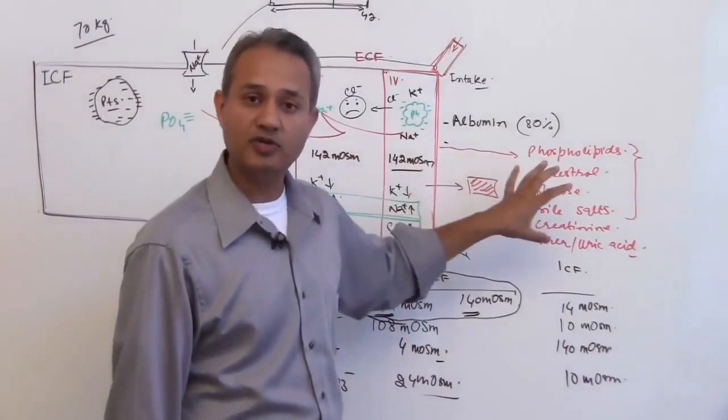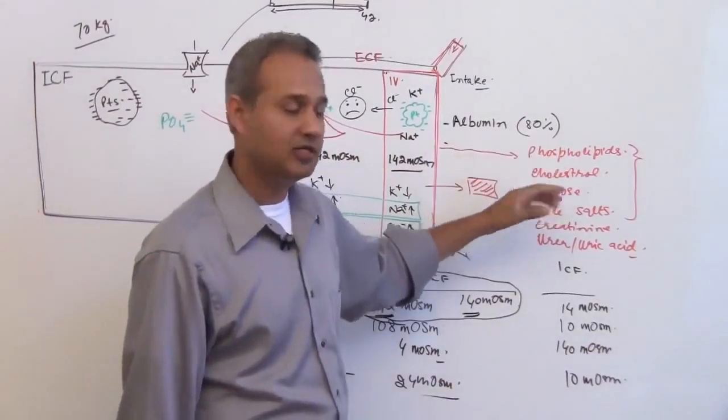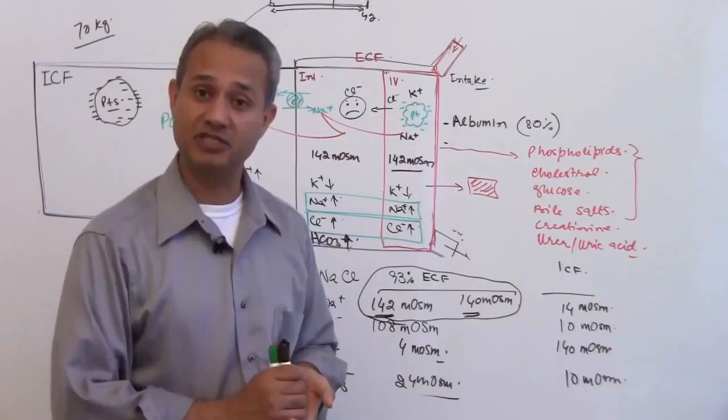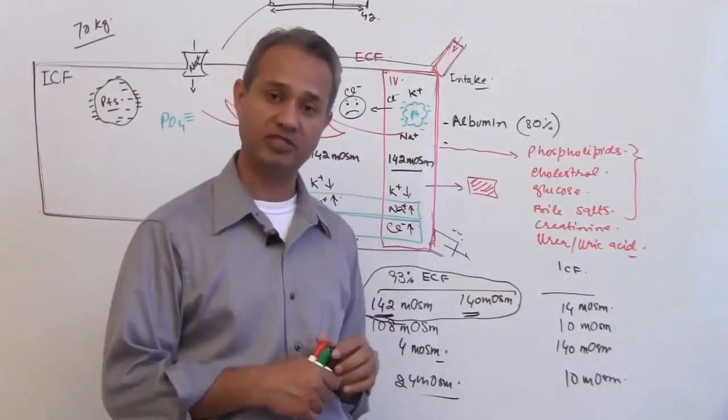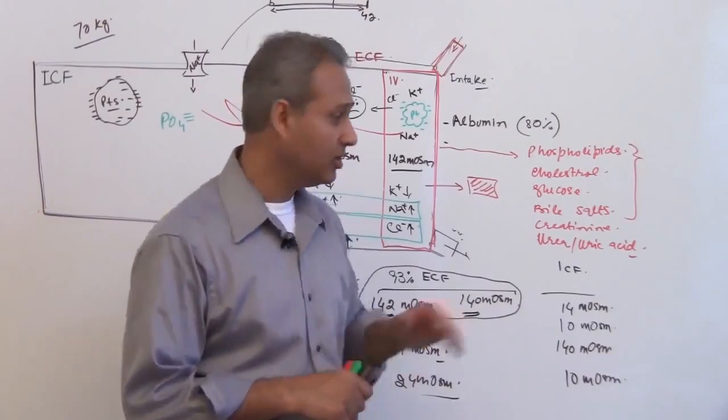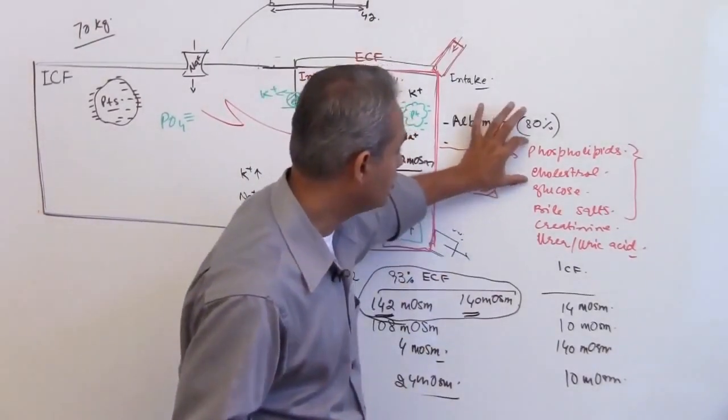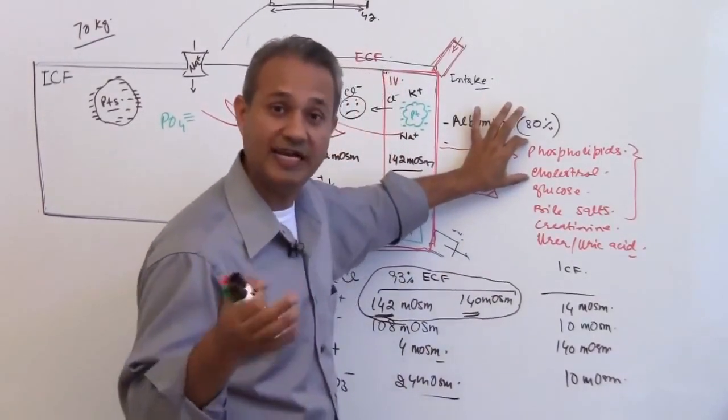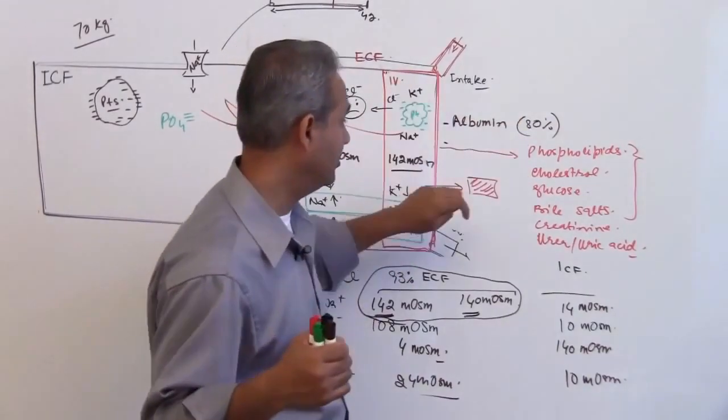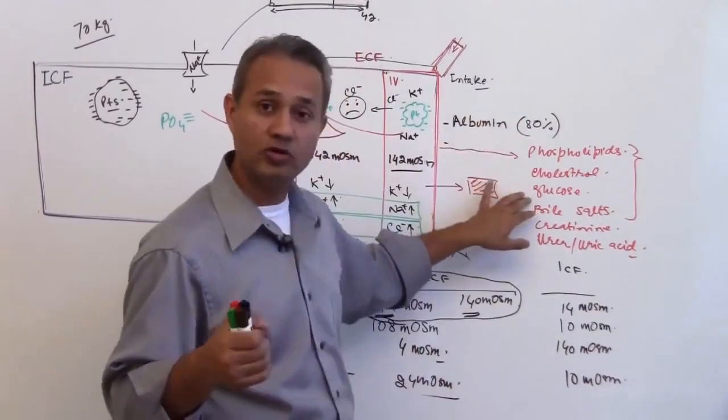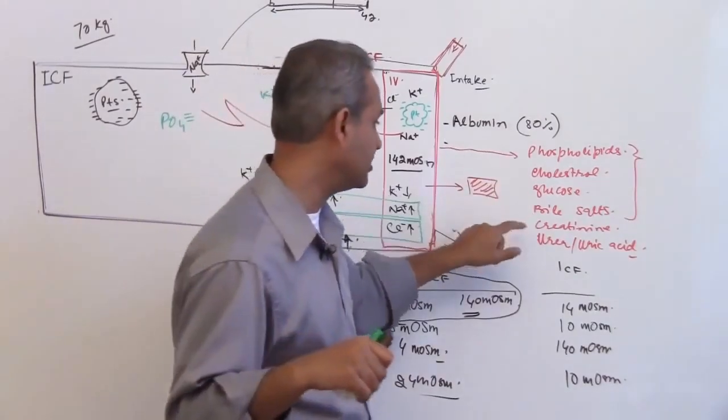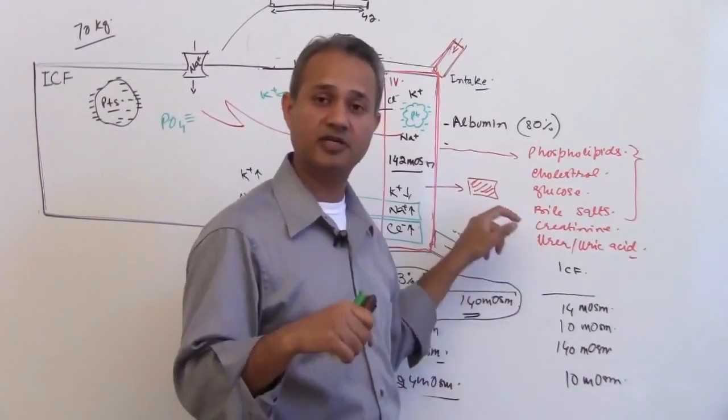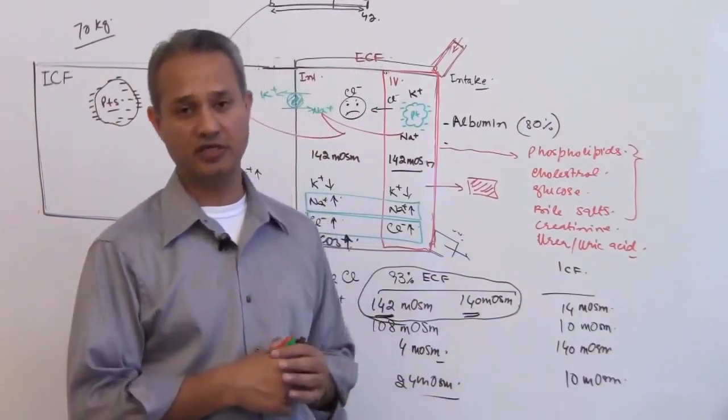Then non-electrolytes, non-charged elements. The majority, I would say about sixty percent of non-charged elements are phospholipids, and then about another twenty to twenty-five percent is the cholesterol. So these are the fatty acids and cholesterols which are making about seventy to eighty percent of the remaining substances in here. Then glucose is a major amount, you know that, about eighty to two hundred milligrams per deciliter. Then we have bile salts, creatinines, urea, uric acids and stuff like that.